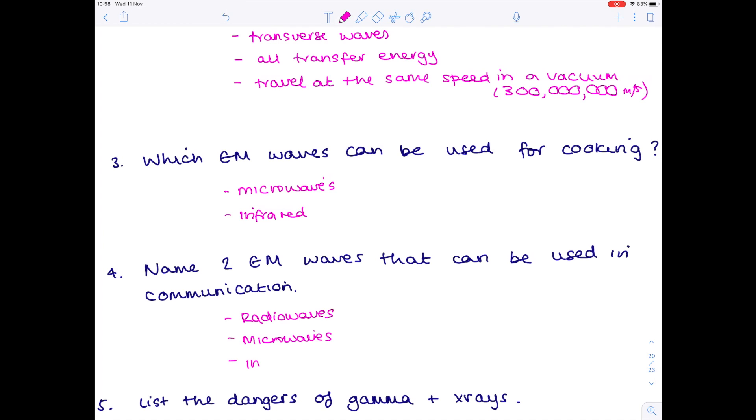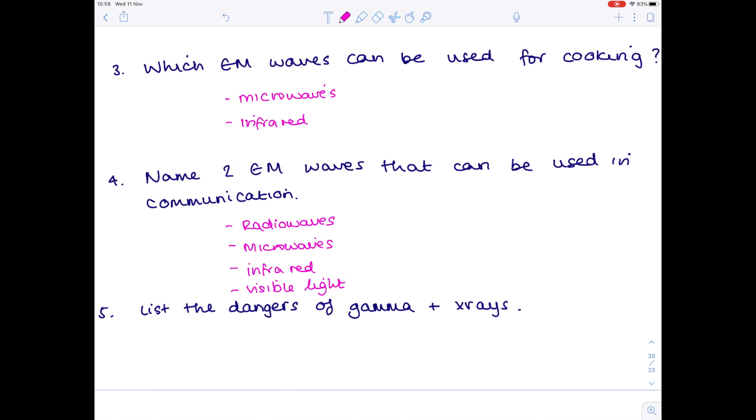List the dangers of gamma and x-rays. Remember, they are ionizing radiation which means they cause mutation, and mutation can potentially cause cancer.